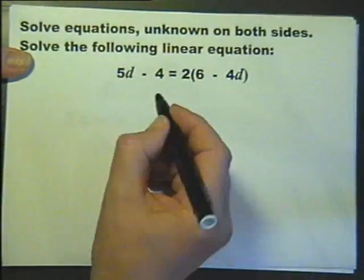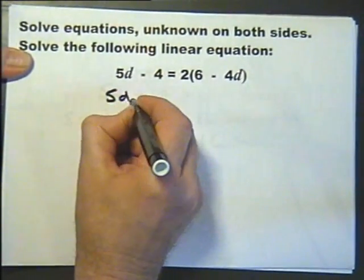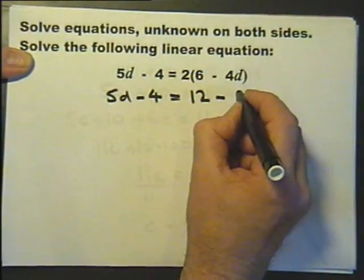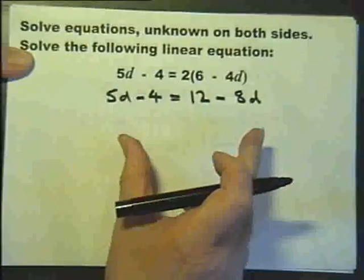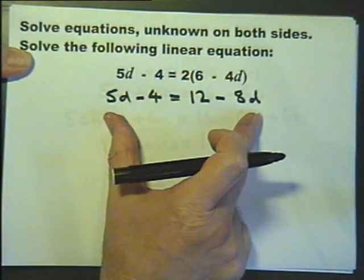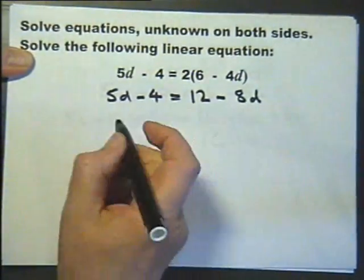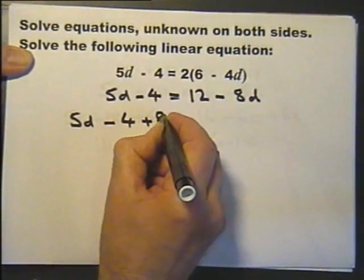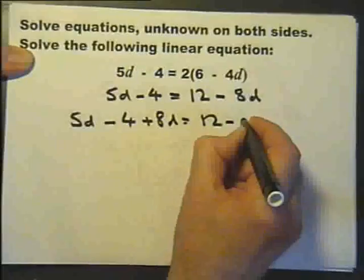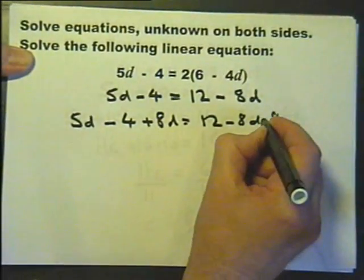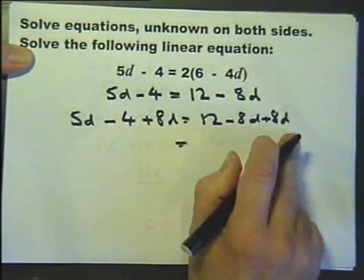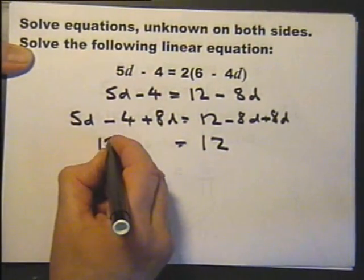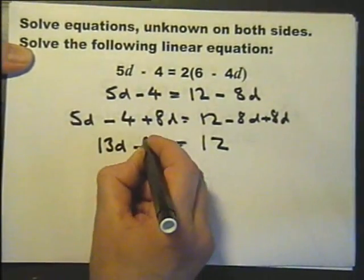And the last one. See a bracket, get rid of it. Two sixes and two fours. What should I do? I am going to add 8d to both sides. So first of all I will add 8d to that side, and I will add 8d to that side. I can see that this is going to cancel leaving me with 12.